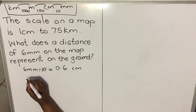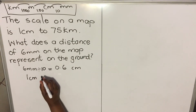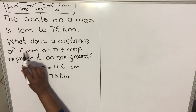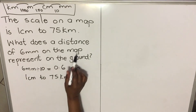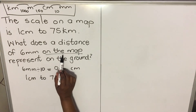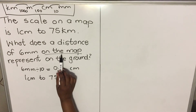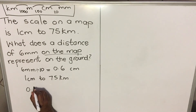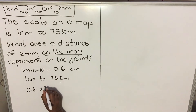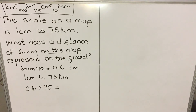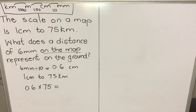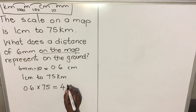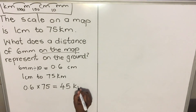Now we use our scale: 1 centimeter equals 275 kilometers. We are given a distance on the map and want to find the ground distance, so we multiply. We have 0.6 centimeters on the map multiplied by 75, which gives us 75 kilometers on the ground.